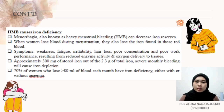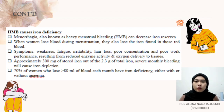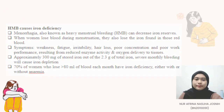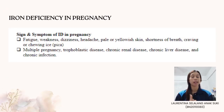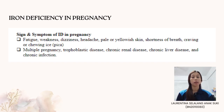Approximately 300mg of stored iron out of 2.3g of total iron — severe monthly bleeding will cause iron depletion. Around 70% of women who lose more than 80ml of blood each month have iron deficiency, either with or without anemia. Signs and symptoms of anemia include fatigue, weakness, dizziness, lethargy, headache, pale or yellow skin, shortness of breath, and craving or chewing ice. Severe anemia symptoms include rapid heartbeat, low blood pressure, and difficulty concentrating.